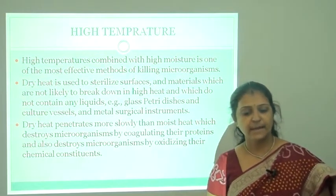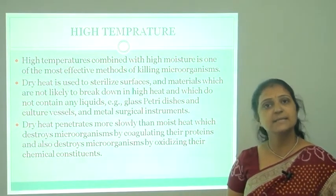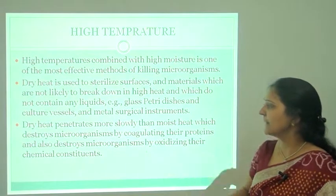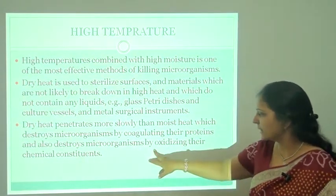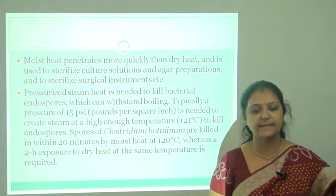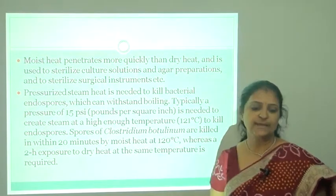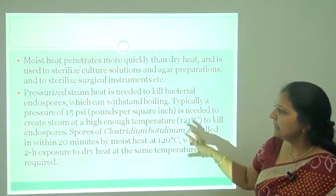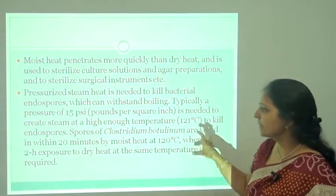Dry heat is used to sterilize surfaces and materials that do not break down under high heat and do not contain liquids — such as glassware, Petri dishes, flasks, and pipettes. Dry heat penetrates more slowly than moist heat and destroys microorganisms by oxidizing their chemical constituents. Moist heat penetrates more quickly and is used to sterilize culture solutions, agar preparations, and surgical instruments. Pressurized steam is needed to kill bacterial endospores, typically requiring 15 psi to create steam at a high enough temperature.